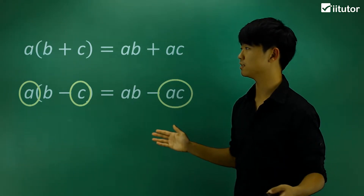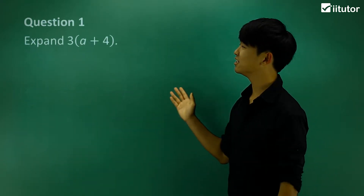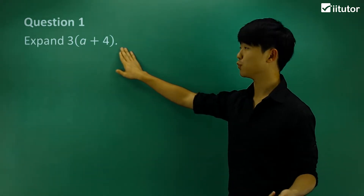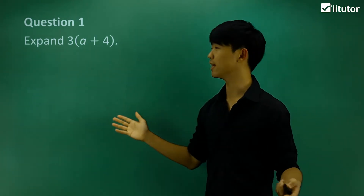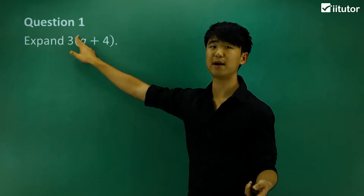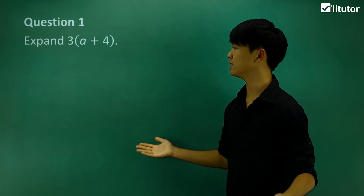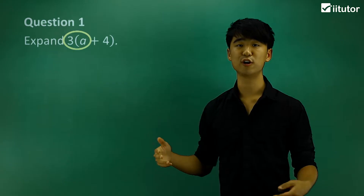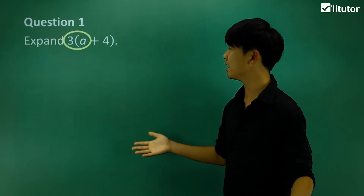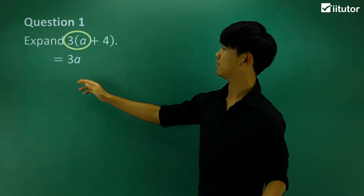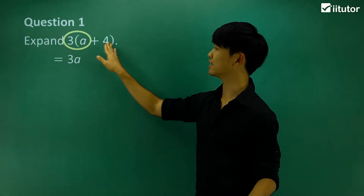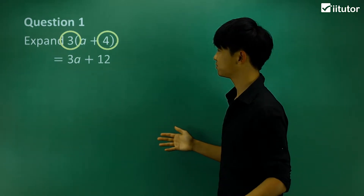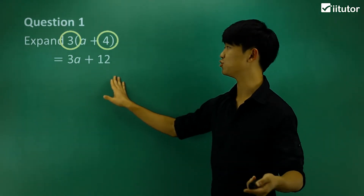Now that we've done a generic example, let's apply it to real numbers. In the first question, we have to expand 3(a+4). This is 3 multiplied by the bracket of a plus 4. We multiply 3 by the first term a to get 3a, then multiply 3 by the positive 4 to get 12. So the expanded form is 3a + 12.